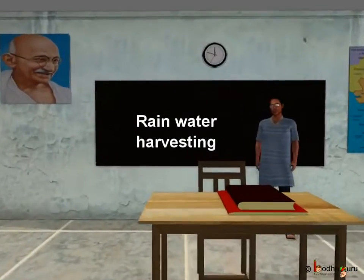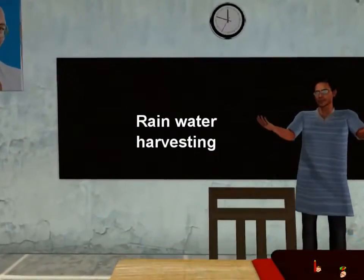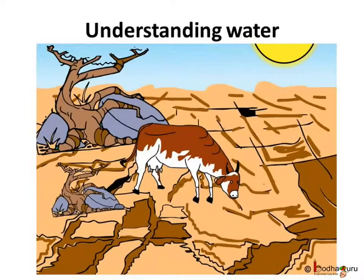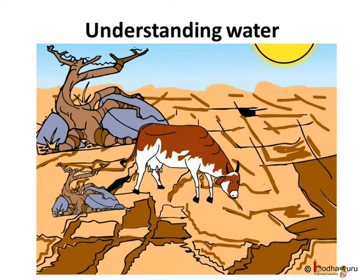Hello children! Today we shall learn about water conservation. In our previous video we saw what can happen if something goes wrong with the water cycle. The lack of rain leads to drought, or too much rain leads to water logging or floods.